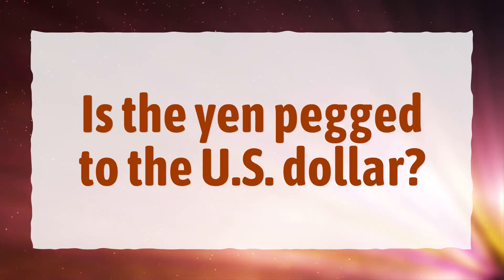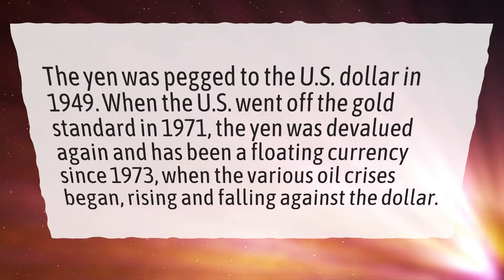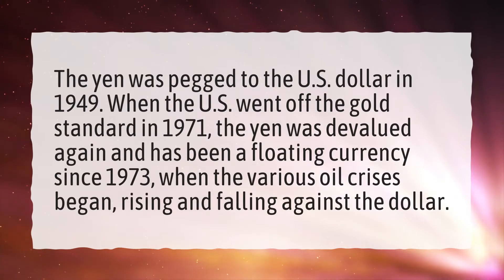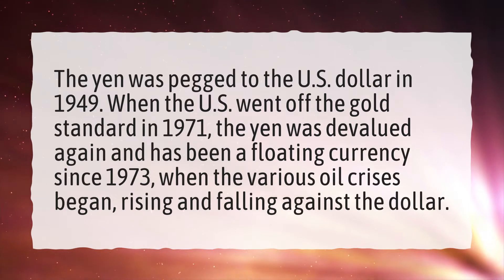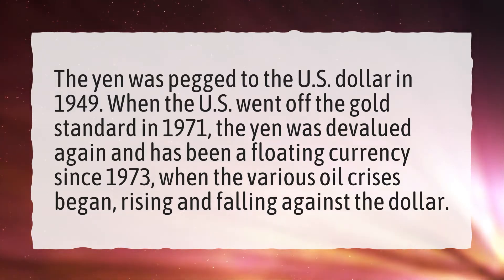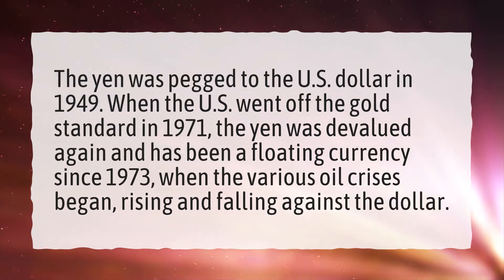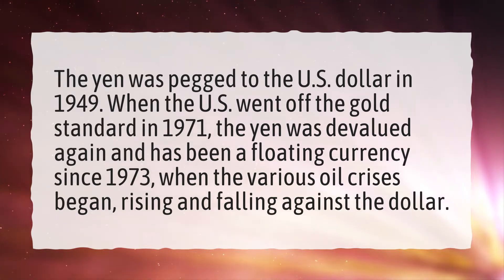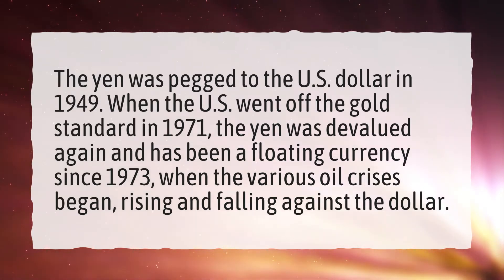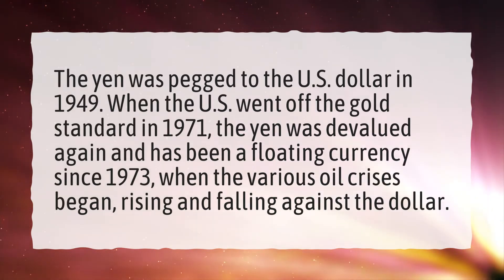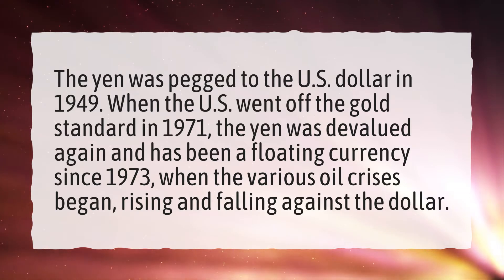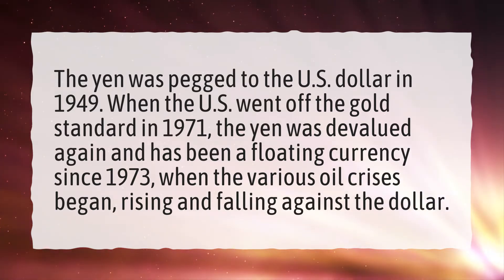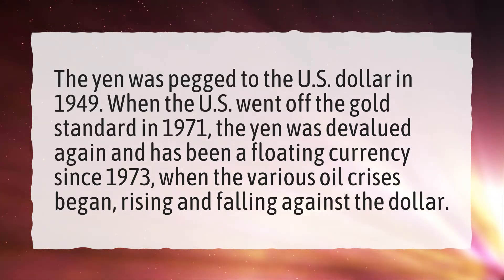Is the yen pegged to the US dollar? The yen was pegged to the US dollar in 1949. When the US went off the gold standard in 1971, the yen was devalued again and has been a floating currency since 1973, when the various oil crises began, rising and falling against the dollar.